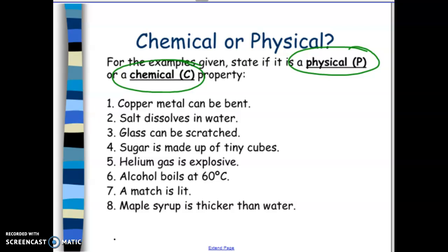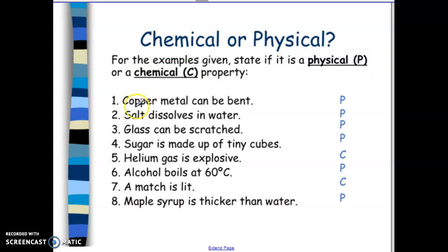So let's take a look. We have copper metal can be bent. So that's a physical property. We're not changing the copper. We're just seeing if we can bend it, and we can. So this is describing the malleability, right? We're able to bend the copper metal.